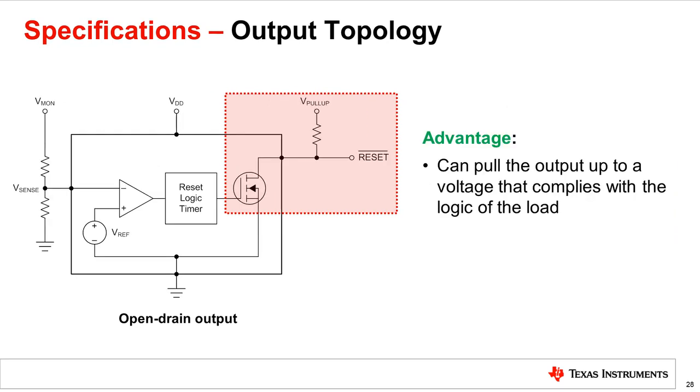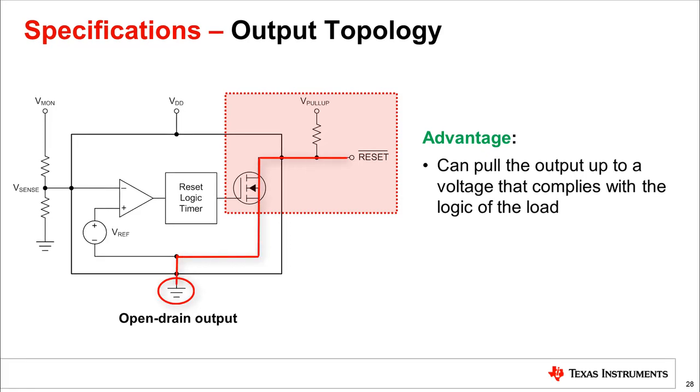For an open drain supervisor, the reset output will either pull up to V pull-up if the N MOSFET is open, or will pull down to ground if the N MOSFET is closed. One advantage of the open drain output is that it can pull up to any voltage that complies with the logic of the load rather than pulling it up to only VDD of the supervisor itself.